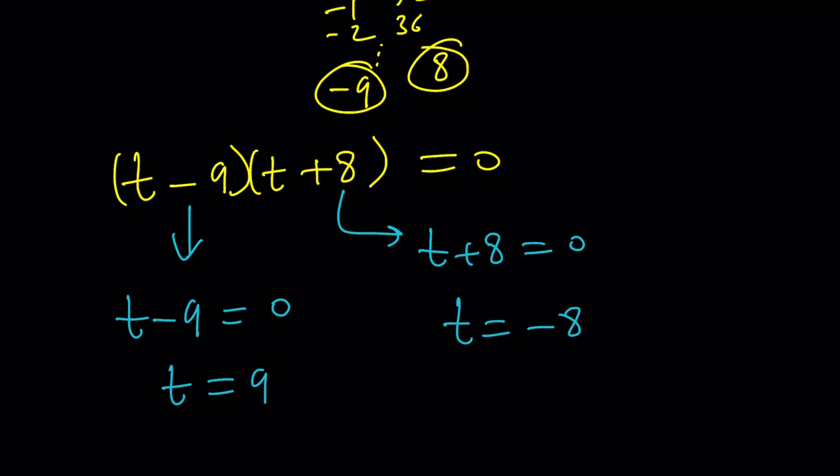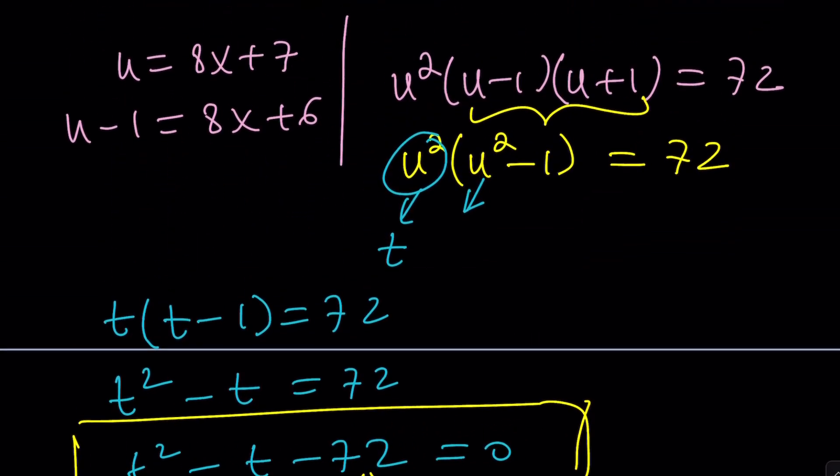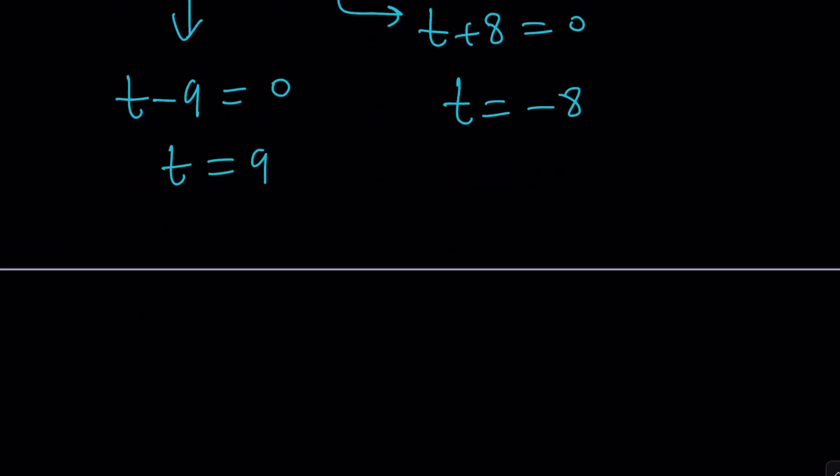Well, let's find out because we still have to back substitute, right? I mean, substitution is cool, but if you do this very many times, then you kind of have to reverse the process or back substitute. In this case, t is what? I forgot. U squared. Yay. Great. So, we're going to replace t with u squared. So, u squared equals 9.